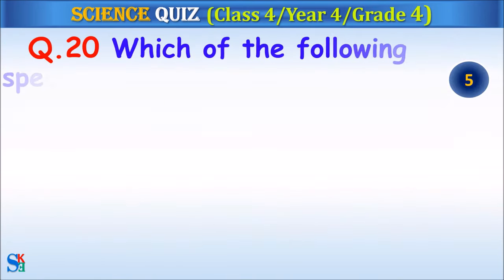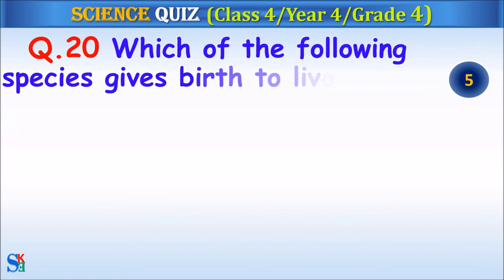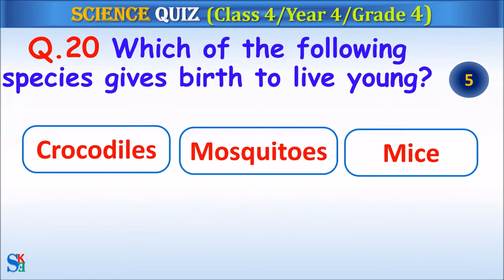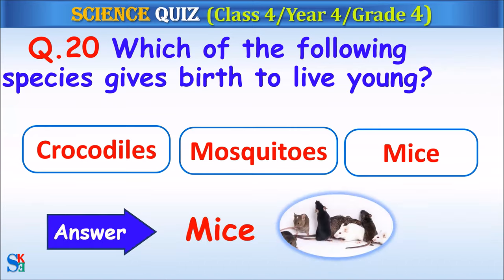Question 20: Which of the following species gives birth to live young — crocodiles, mosquitoes or mice? Your time starts. The answer is mice.